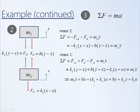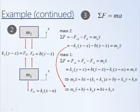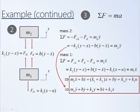Similarly for M2: M2 Y double dot on one side; the negative B Y dot and negative K2 Y become positive when moved to the right. The negative K2 multiplied by negative X becomes positive, and negative B multiplied by negative X dot becomes positive. Together, these two differential equations describe the motion of the quarter car suspension — one differential equation per independent inertia.